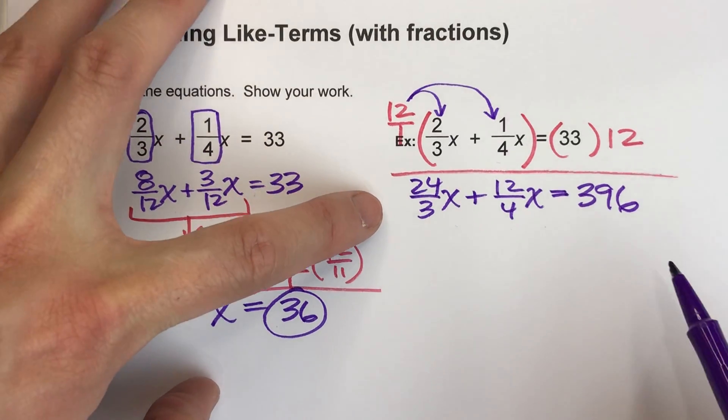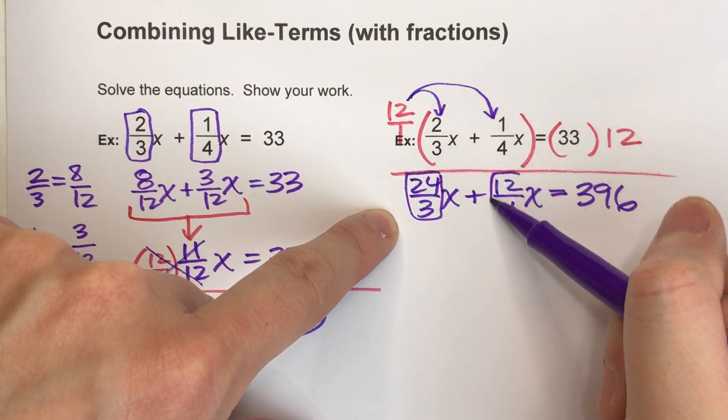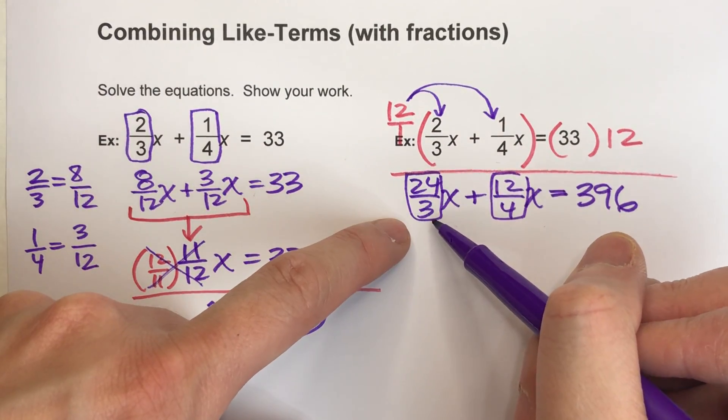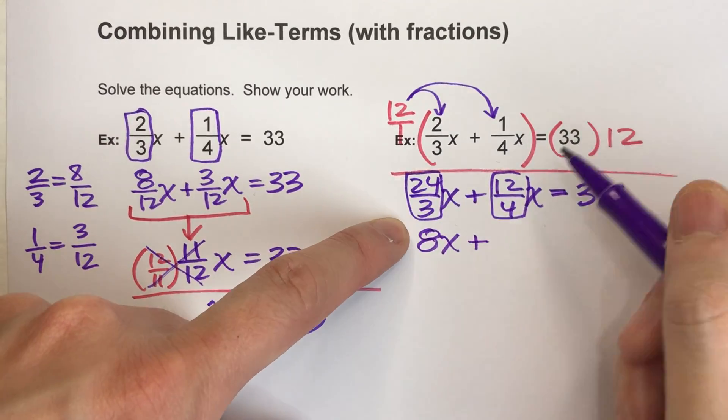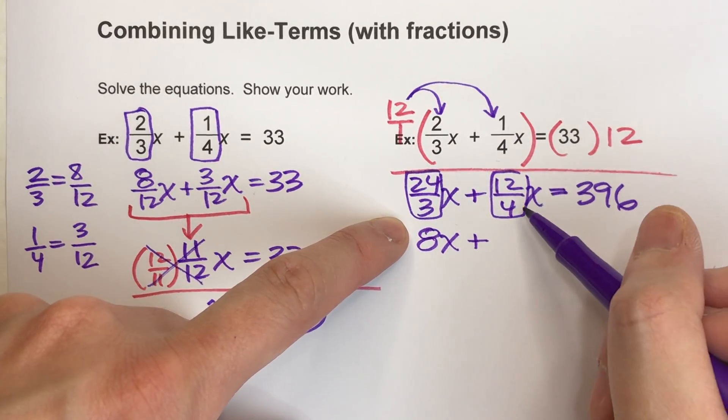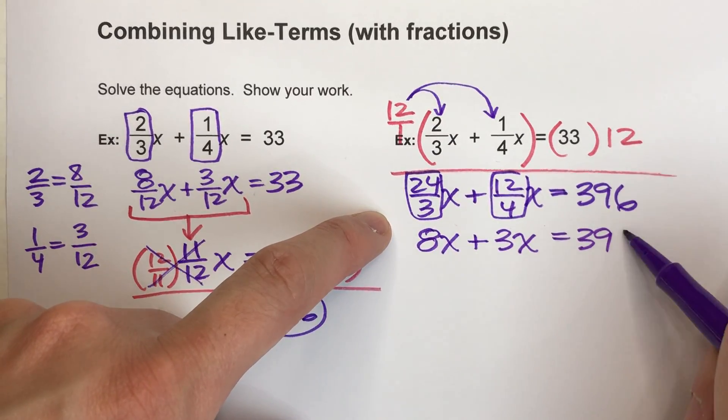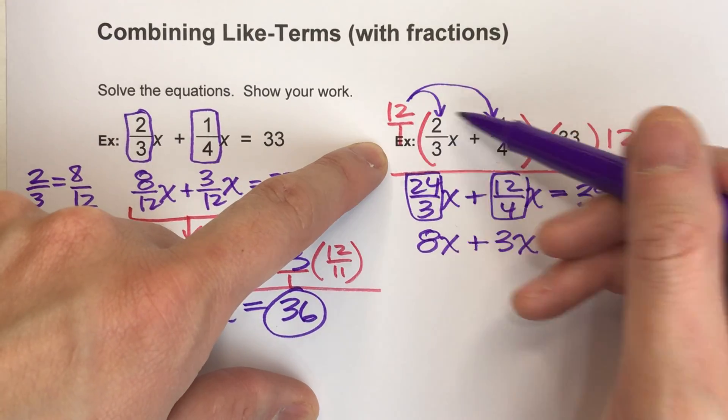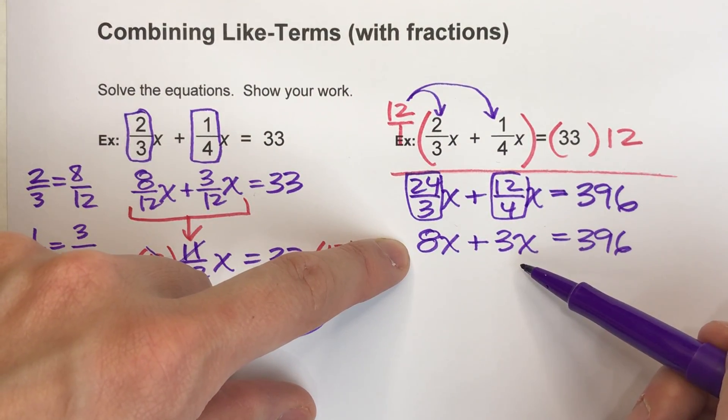Now at first you're thinking, why would I do this? This looks like a mess. But it turns out, all of these fractions are just going to become whole numbers. Because think about it. 24 divided by 3, that's just 8. So this is 8x. Plus, 12 divided by 4, that's just 3. So this is 3x equals 396. You see, by multiplying this whole thing by the common denominator, it will always multiply those fractions into fractions that make whole numbers.